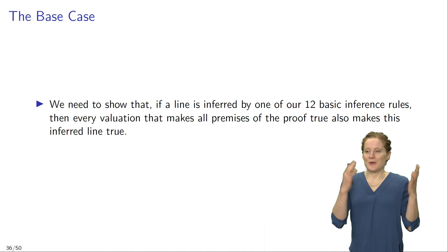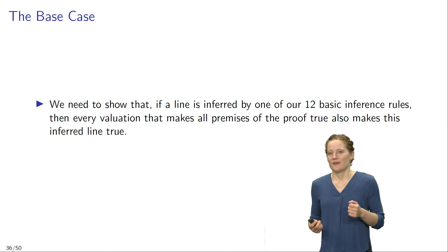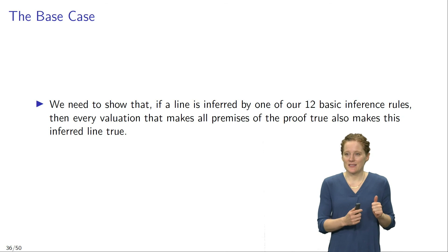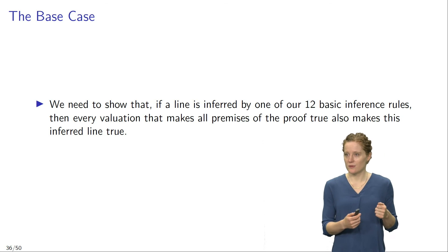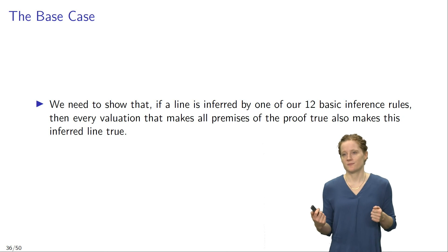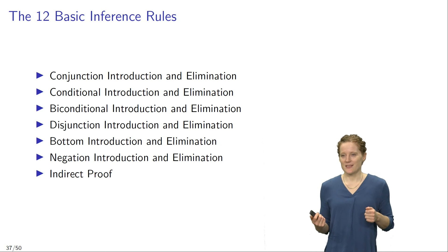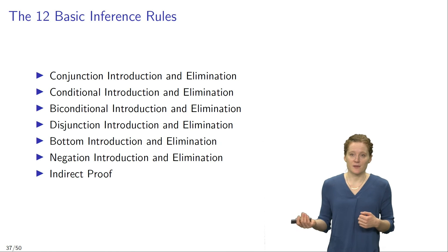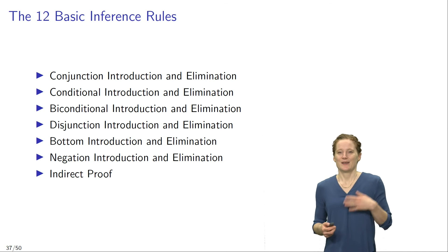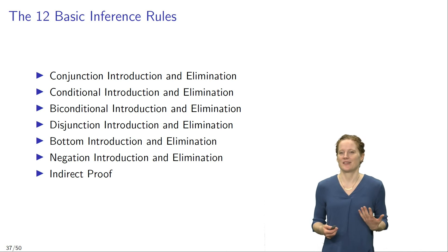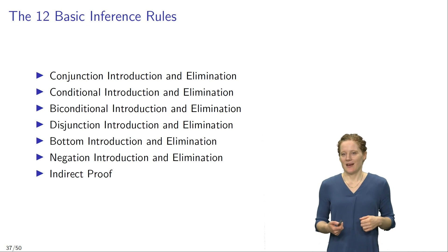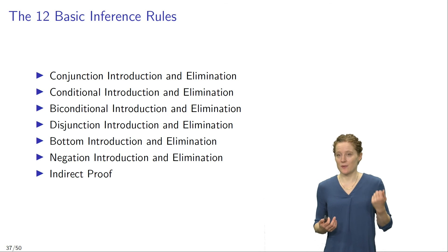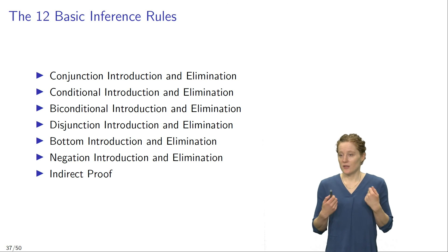Let's think about both the base case and the inductive step more carefully. In the base case, we need to show that if a line is inferred by one of our 12 basic inference rules, then every valuation that makes all premises of the proof true also makes this inferred line true. To show this we need to look at all 12 basic inference rules separately: conjunction introduction and elimination, conditional introduction and elimination, biconditional introduction and elimination, disjunction introduction and elimination, bottom introduction and elimination, negation introduction and elimination, and indirect proof. We will look at a few examples to illustrate how this proof goes.